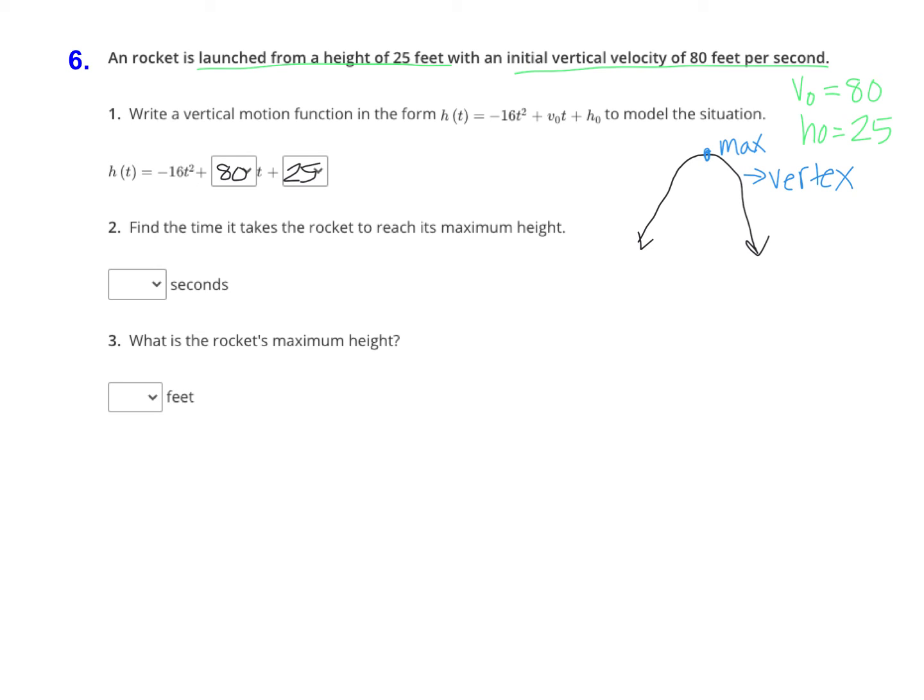To find the x-coordinate of the vertex, or in this case the t-coordinate, the time, we use the equation t equals negative b divided by 2a. That's a formula that you should have written down in your 8.5 notes. If you don't have that written down, make sure to add that. That's the starting point for every question.